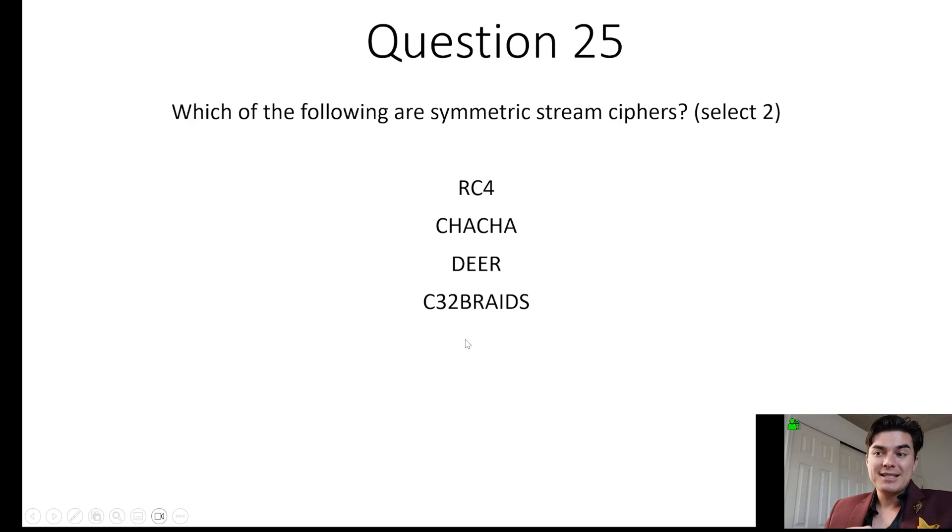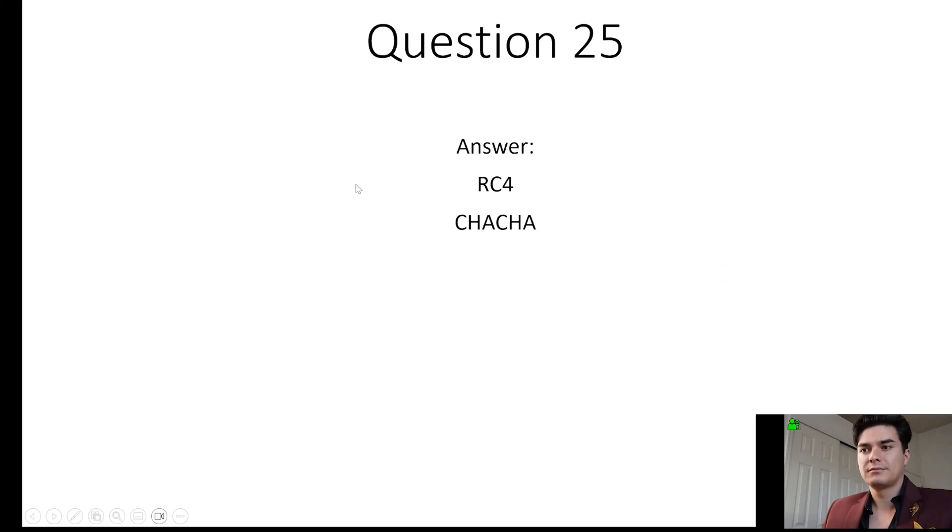Now, C32BRAIDS, that is another acronym to help remember all the symmetric algorithms. And this is going to help you a lot. C stands for CAST. 3 stands for Triple DES, so 3DES. 2 stands for Twofish. B stands for Blowfish. The R stands for RC4, like dash 6, because there's RC4 and 6. A stands for AES. I stands for IDEA. D stands for DES. And then S means, hey, this is all symmetric here. So that will help you remember the different asymmetric and then the symmetric algorithms. So again, the answer is RC4 and ChaCha.